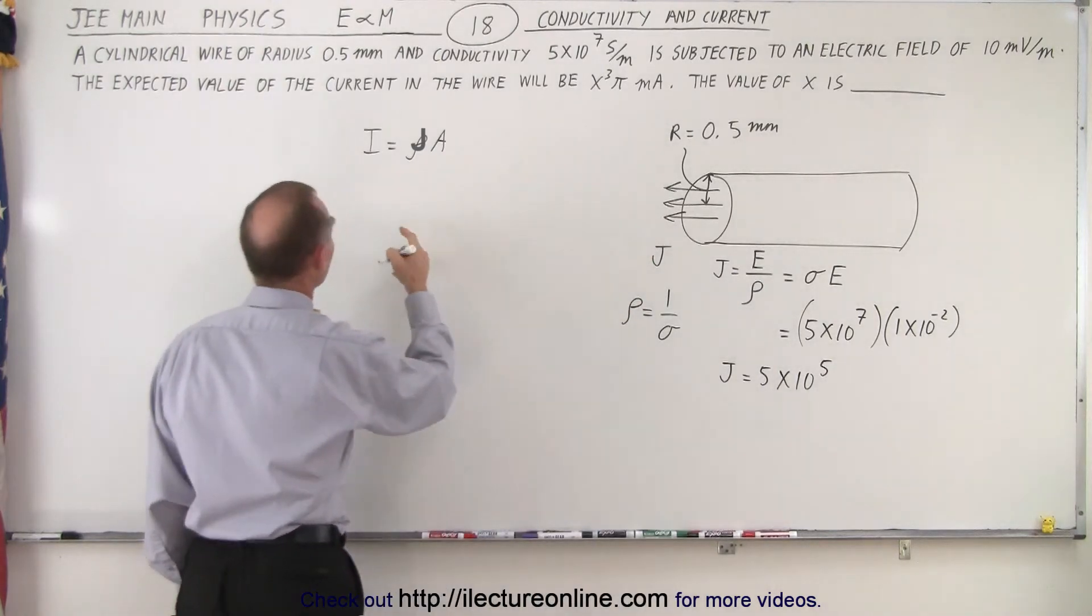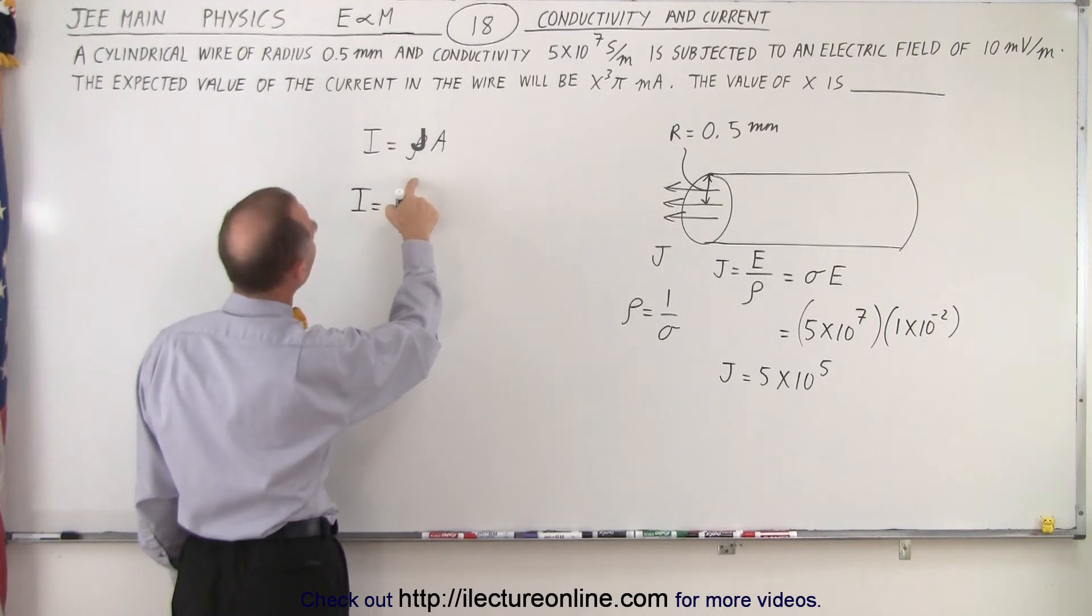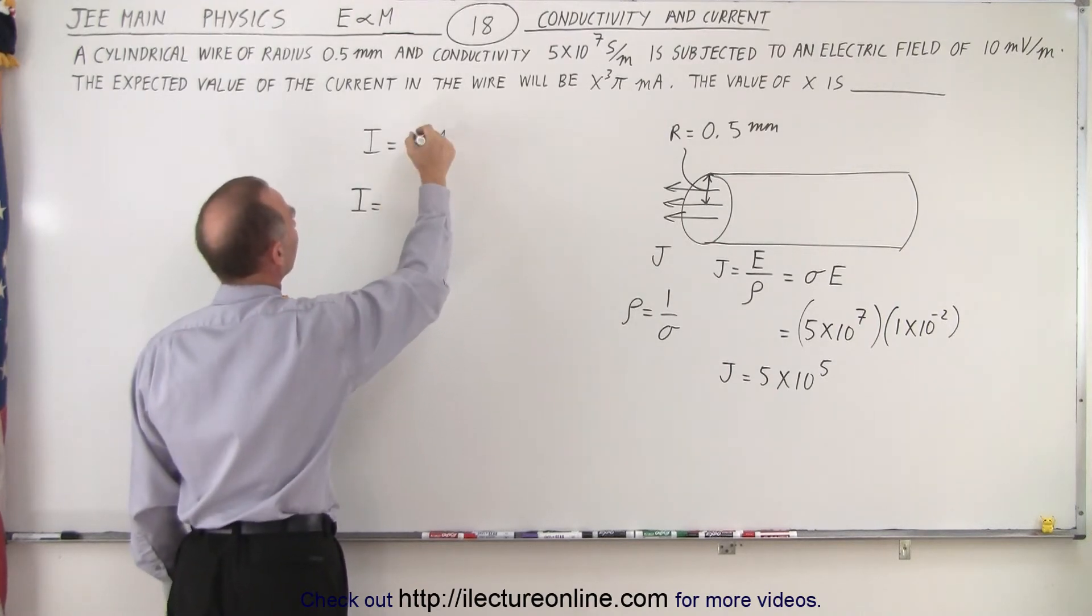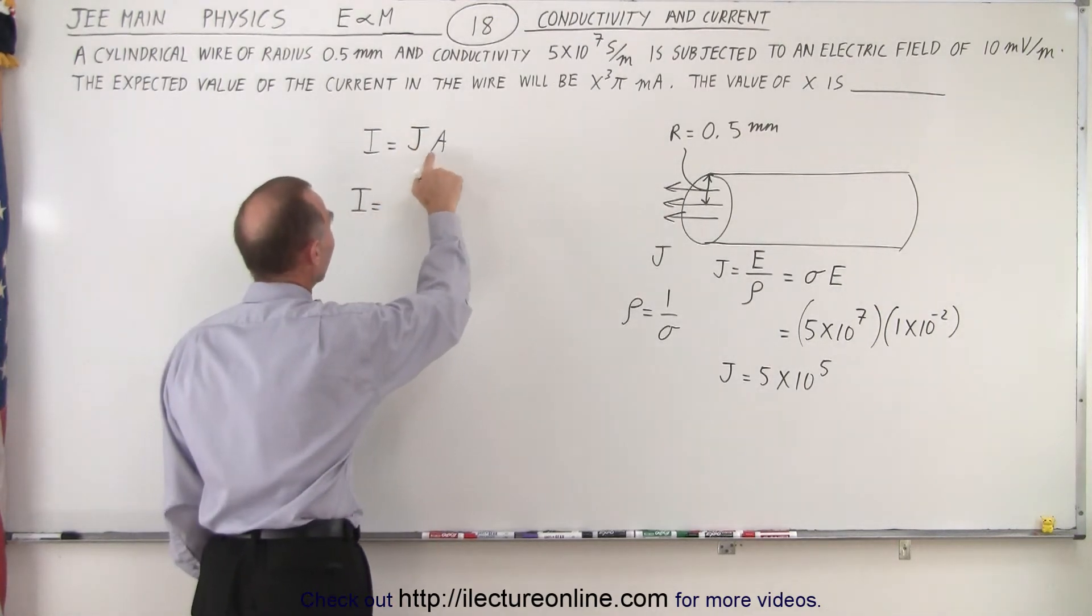Then we come up here, and we say that i is equal to the current density. Oh, what am I saying here? This is incorrect. I'm looking for the current density symbol. Sorry about that. So i equals j times A.